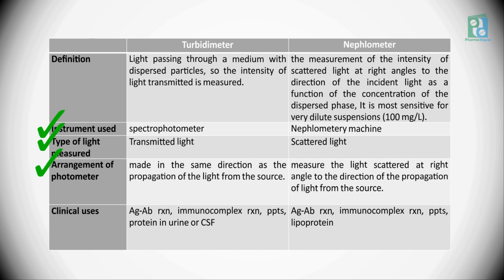It could be a movable detector which allows the operator to select the angle of detection. For the turbidometer, clinical uses include antigen-antibody reaction, immune complex reaction, precipitation reaction, and detection of protein in urine or cerebrospinal fluid. For the nephelometer, the same antigen-antibody reaction, immune complex reaction, and precipitation reaction, along with lipoprotein detection.